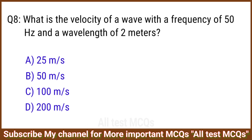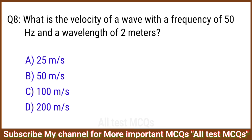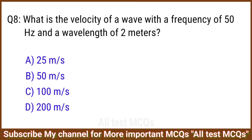Q8. What is the velocity of a wave with a frequency of 50 Hz and a wavelength of 2 m? The right answer is option C: 100 m per second.